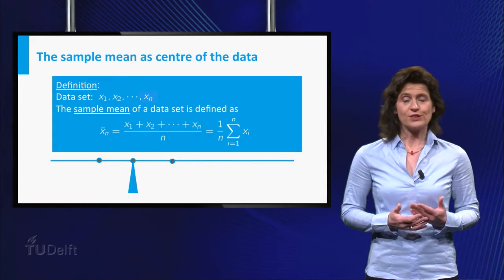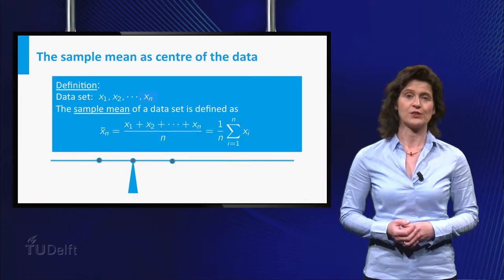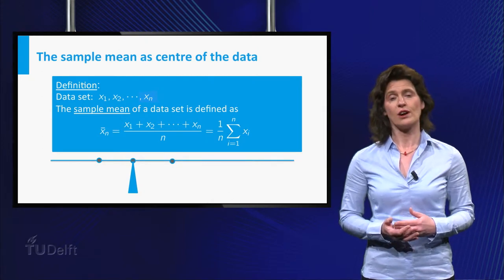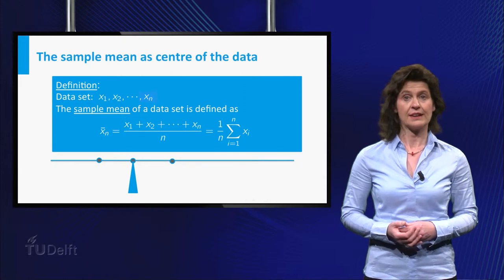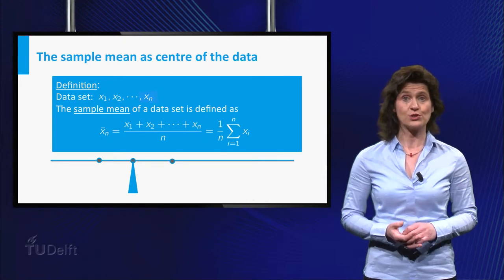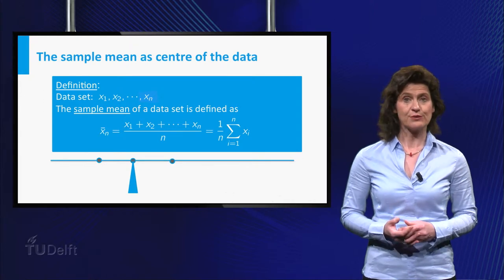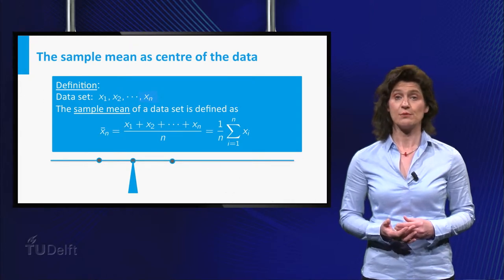If you wish to denote a dataset in general, so without specifying the points with numbers, you write it as x1, x2 up till xn. Here n is the number of values, usually called the sample size. Then the formula for the mean is given using the summation symbol sigma.